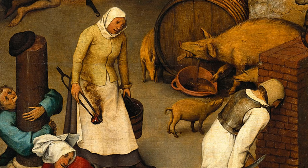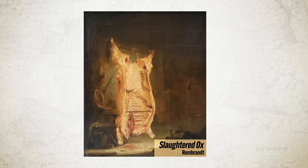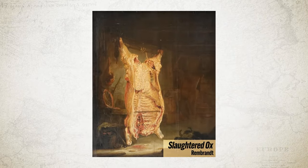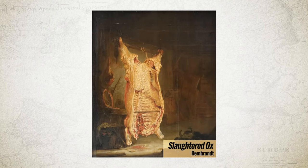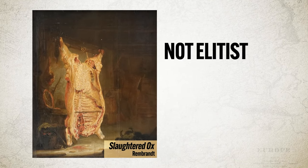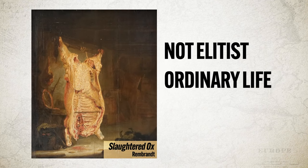Or consider one of the greatest artists of the Dutch Renaissance, Rembrandt. Here's his painting called Slaughtered Ox. There's no symbolism here — it's a painting of a slaughtered ox. This is in no way an elitist theme that you'd see in the Italian Renaissance, but rather a scene from ordinary life.